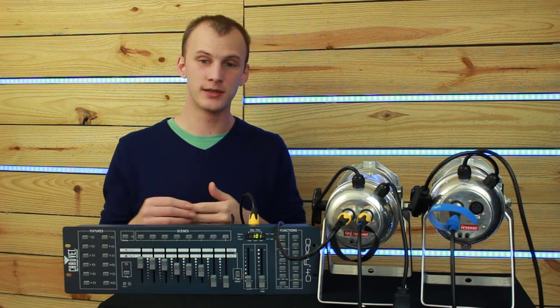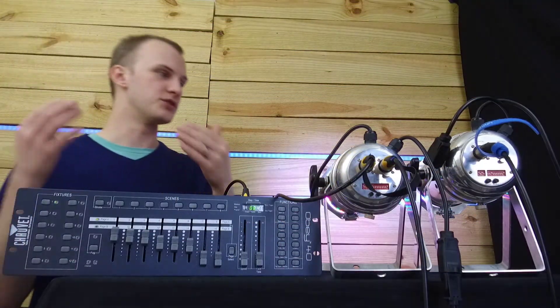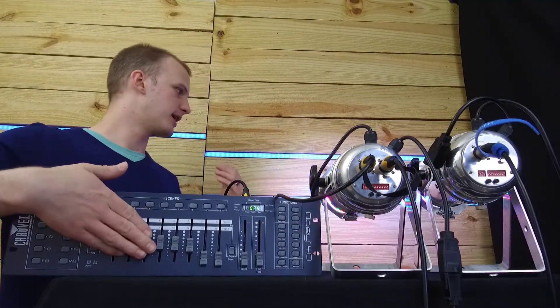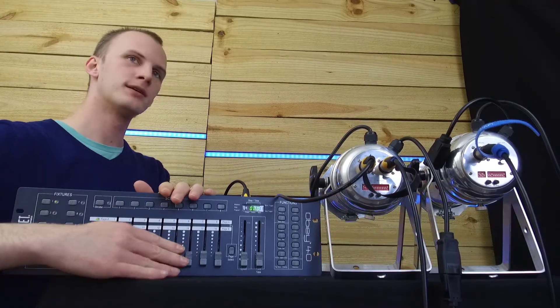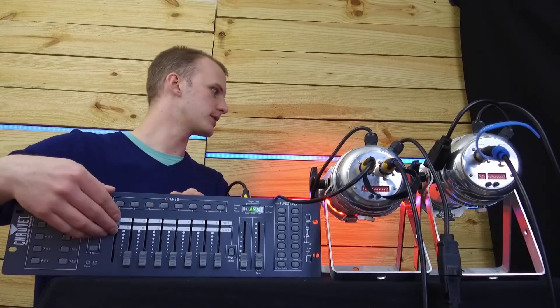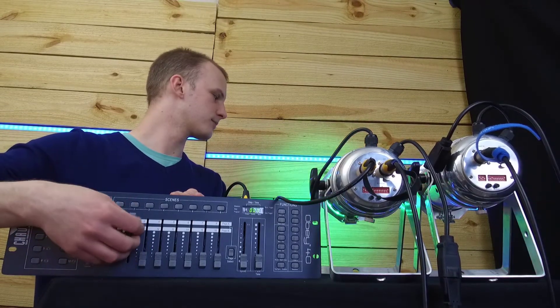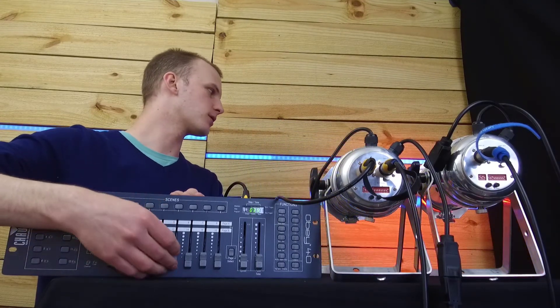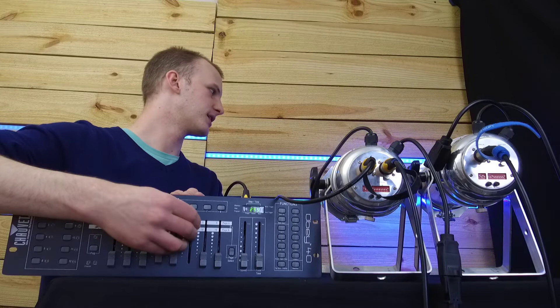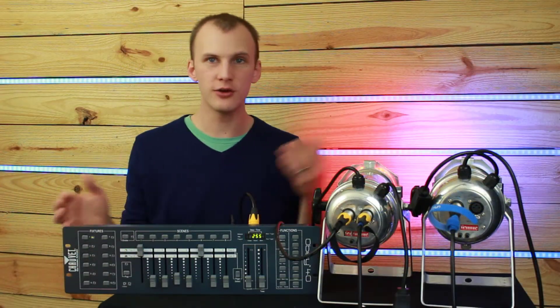Now that we've got that addressed, we just need to select the first fixture on the console, which is right here, and the units jump to where the faders were set. So I'm going to bring the faders down, and I can show you now that fader 1 is red on the first fixture, 2 is green, and 3 is blue. Similarly, channel 4, 5, and 6 controls the second fixture. So we can literally have two different colors here on our two different fixtures.